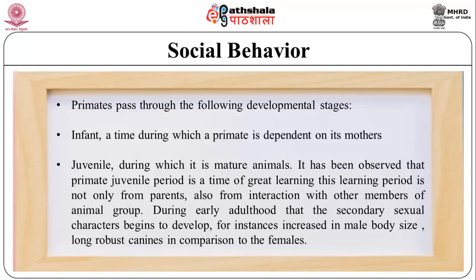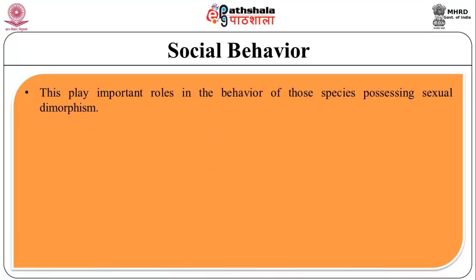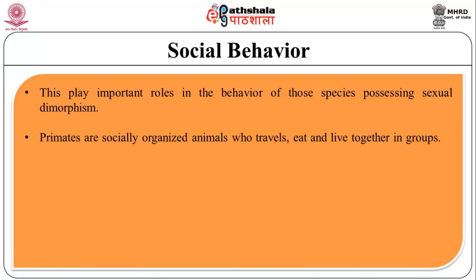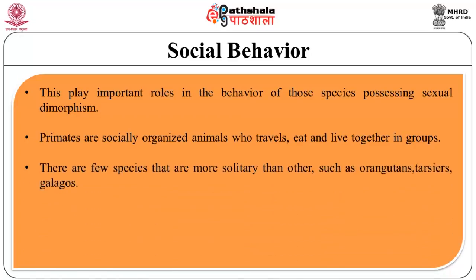During early adulthood, secondary sexual characters begin to develop — for instance, increased male body size and longer, more robust canines compared to females. These play important roles in the behavior of species possessing sexual dimorphism. This extended period of development and growth is one of the hallmarks of the order primates. Primates are socially organized animals who travel, eat, and live together in groups. There are a few species that are more solitary than others, such as orangutans, tarsiers, and galagos.